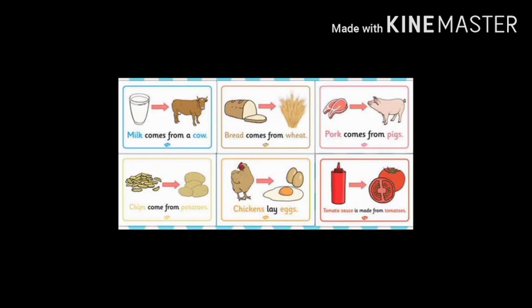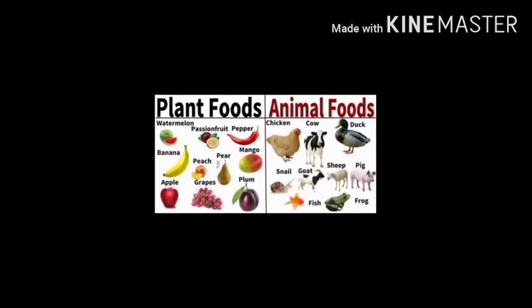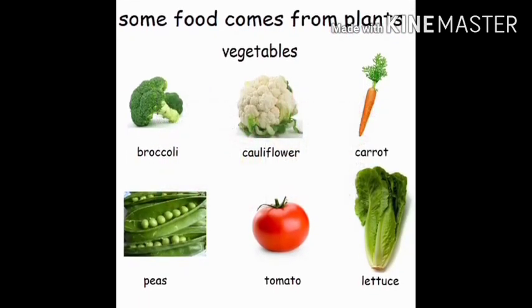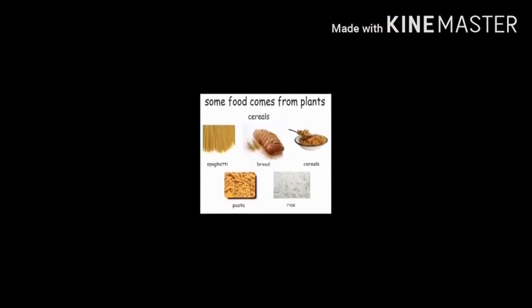Milk comes from cows, bread comes from wheat, and pork or meat comes from the flesh of various animals. Plant parts such as stems, roots, leaves, fruits, flowers, and seeds are all eaten and consumed by most people in India.